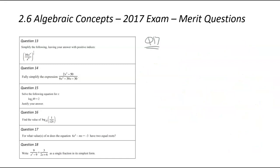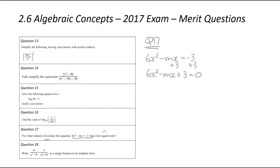We are now on question number 17. We've been asked: for what values of m does the equation 6x squared minus mx equals negative 3 have two equal roots? The key thing here being equal roots. So we've got 6x squared minus mx equals negative 3. A quadratic needs to be equal to 0, so adding 3 to both sides: 6x squared minus mx plus 3 equals 0. We've been asked about two equal roots, and roots will be equal when b squared minus 4ac equals 0. So a equals 6, b equals negative m, and c equals 3.